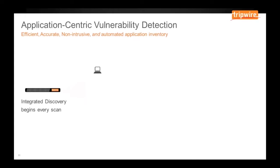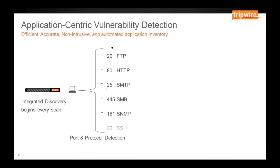After it finds an asset, it begins by performing a port scan and, as open ports are found, it verifies that the expected protocol is present on that port.